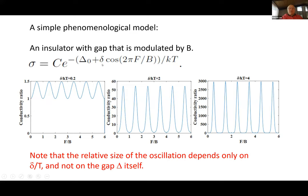But if that gap is modulated as a function of magnetic field with magnitude delta, then the ratio of conductivity would be modulated. The modulation depends only on the ratio δ/kT and not on the gap itself. So you can have a very strong insulator with a very large Δ₀, and even if you have a small gap modulation, if you go to temperature small compared with that modulation you can get enormous oscillation in the ratio.